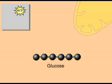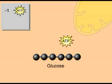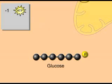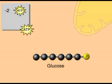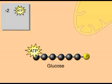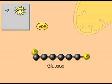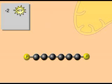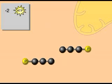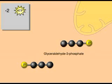In the energy investment phase, some ATP energy is used to start the process of glucose oxidation. By the end of this phase, a six-carbon molecule, glucose, has been split into two three-carbon molecules of glyceraldehyde phosphate.